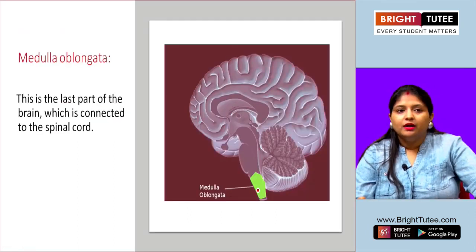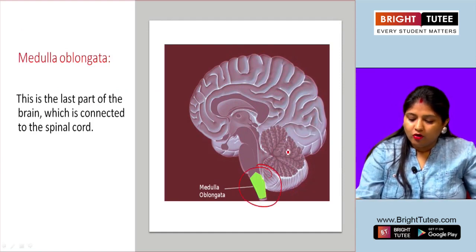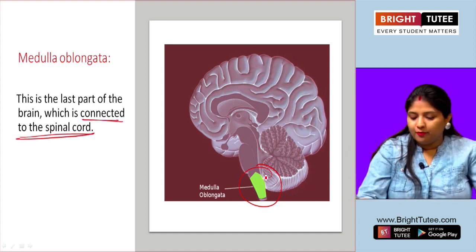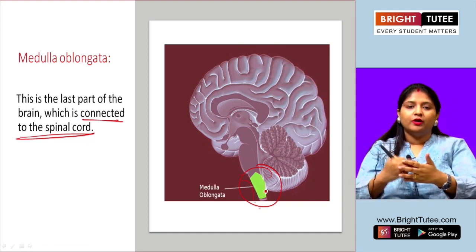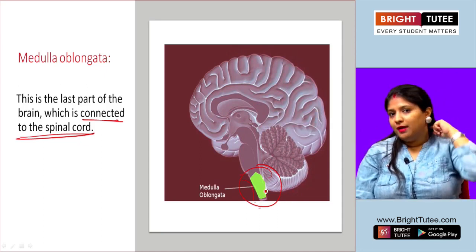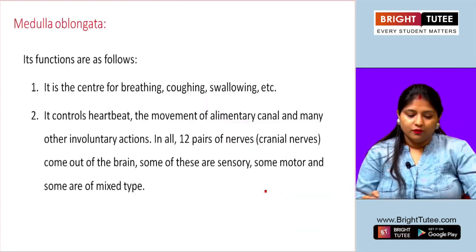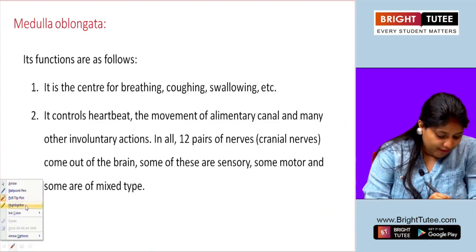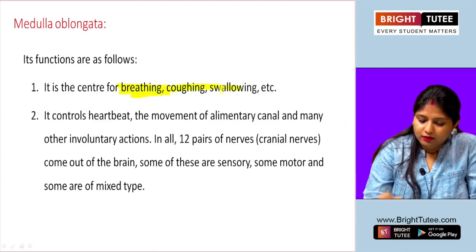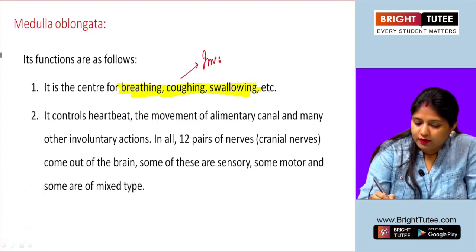The next important part is the medulla oblongata, the last part of the brain which is connected to the spinal cord. Located further below the cerebellum, it is at the base of the skull and is where the spinal cord begins. The medulla oblongata is the center for involuntary functions such as breathing, coughing, and swallowing — all of which are out of our conscious control.